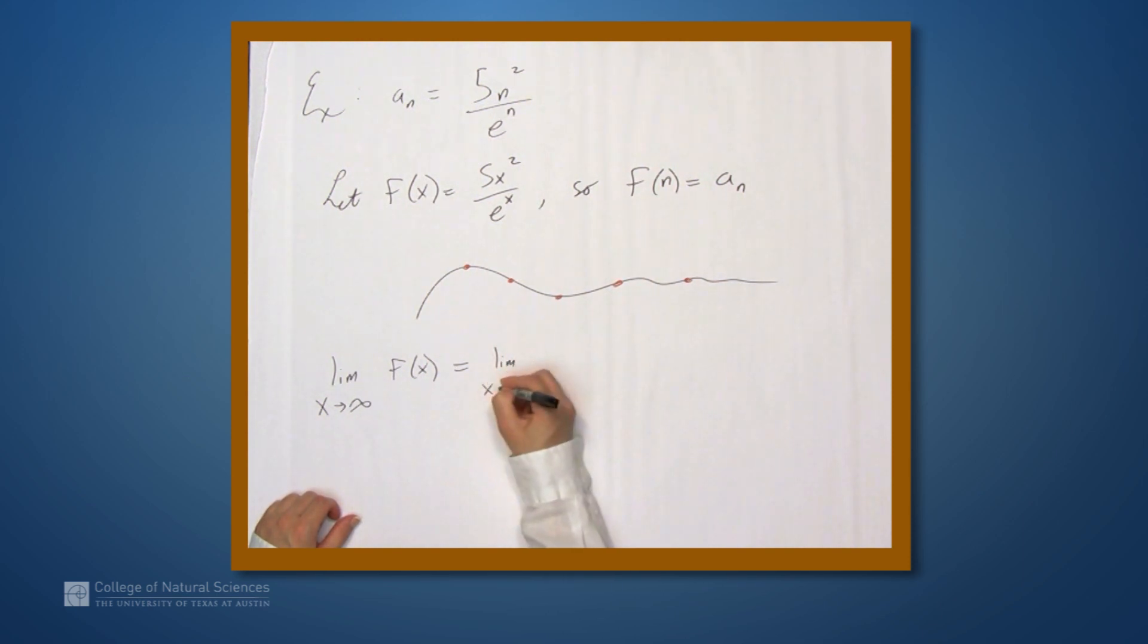So we get the limit as x approaches infinity. We can apply L'Hopital's rule because both the top and the bottom are going to infinity. So we take the derivative and we get 10x over e to the x.